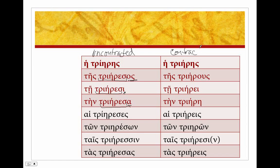Let's take a look at what's going on. The nominative trieres doesn't contract because there's no intervocalic sigma. For the genitive trieresos, we remove this sigma and get -eos, and that contracts to trieres.